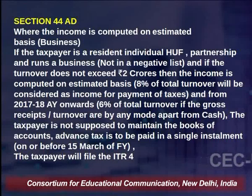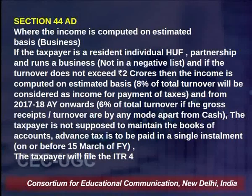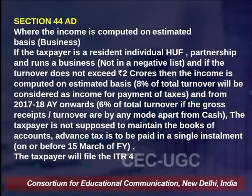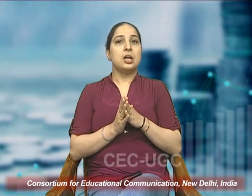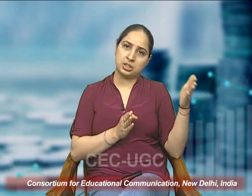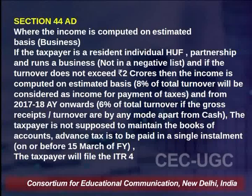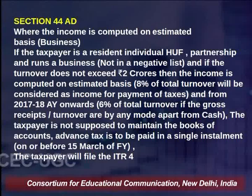The 6% benefit is available from the assessment year 2017-18 onwards, given by the government. Why? Because if you make payments using modes other than cash — if you use UPI, DD, or account payee cheque — then your income on an estimated basis will simply be 6% of your total turnover, which you declare as your income on an estimated basis.